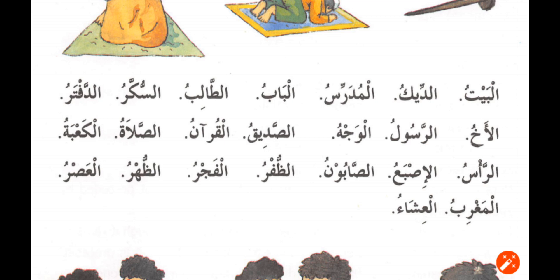Al-Baitu means House. Al-Ka'bah means the Ka'bah. Al-Ra's means Head. Al-Isbah means Finger. Saboon means Soap. Az-Zufr — I think it is Thumb — actually it is Nail. Al-Fajr means Morning or Subhi. Az-Zuhr means Afternoon. Al-Asr means Late Noon. Al-Maghrib means Sunset. Al-Ishaa means Night.